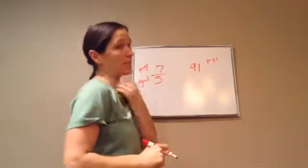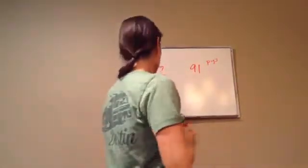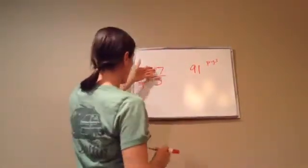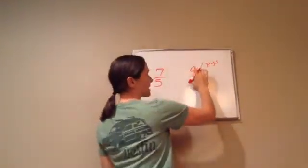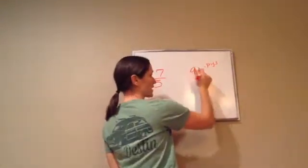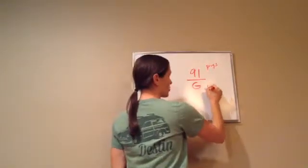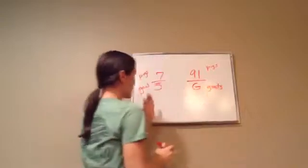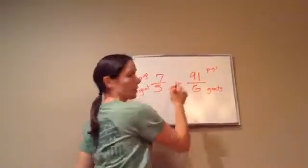We're kind of making a ratio. So we know that there are 7 pigs to every 5 goats. And then they tell us there's a total of 91 pigs. So we don't know. I'm going to put a G for goats. Now, do you see how we set that up? Pigs to goat. Pigs to goat. And you equal them.